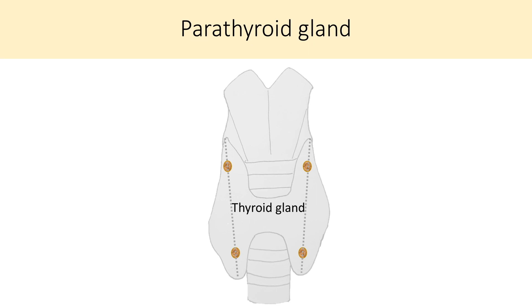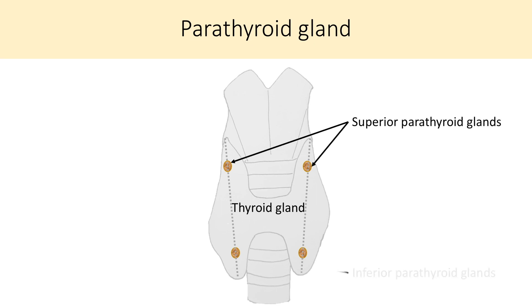Parathyroid glands are two pairs of small yellowish-brown oval structures which are present along the posterior border of the lobes of thyroid gland. They are present between the true and false capsules of thyroid gland.